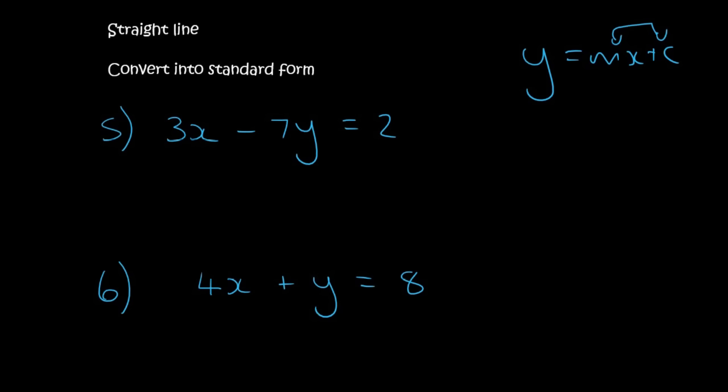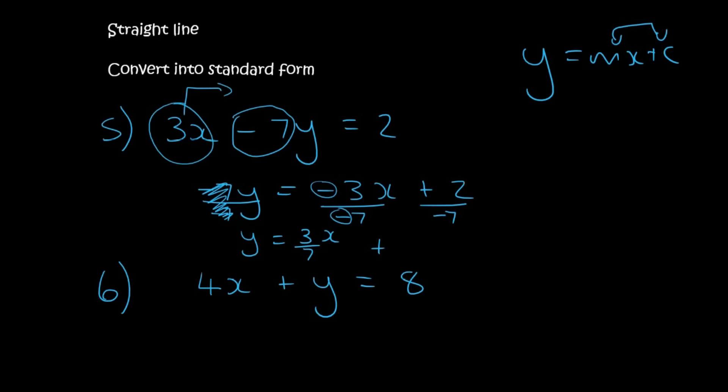Here's the last two. So you want to get y on the left by itself. So minus 7y will stay there. This 3x will move over, where it will become negative. You then divide everything by negative 7, in order to get y alone. And so y will be equal to, and then this negative and this negative cancels. So that will be 3 over 7x, plus, oh no, this will actually become negative. You can type it in on your calculator. It will be negative 2 over 7.